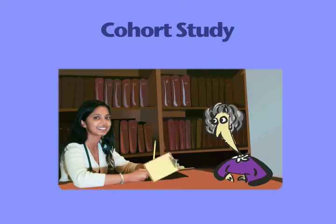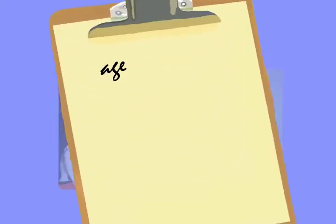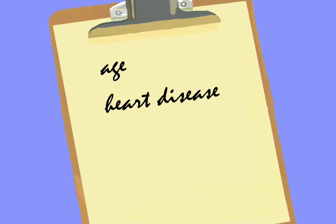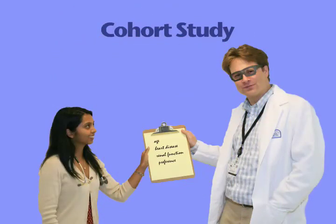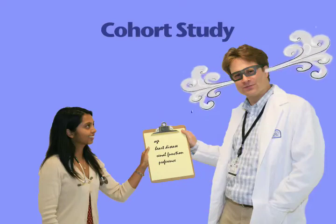For example, a patient and her physician might consider the patient's age, a history of heart disease, her renal function, and her personal preference before deciding to start her on daily aspirin. All these could be related both to why she is starting aspirin and why she is at risk of a GI bleed. Factors like these may make a cohort study much more difficult to analyze than a controlled trial.